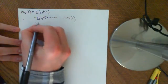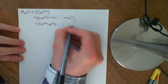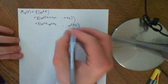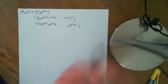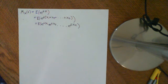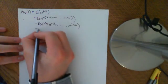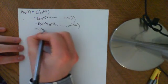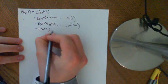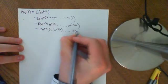We can split this into the expected value of e^(tX1) times the expected value of e^(tX2), all the way up to e^(tXn), multiplied together. X1 through Xn are independent — the intuitive reason is that what you get on the second flip does not affect any of the other flips, and that holds for any flip. So they are all independent, and their exponentiations are also independent. Therefore we can split this up into the expected value of e^(tX1) times the expected value of e^(tX2), all the way up to the expected value of e^(tXn).